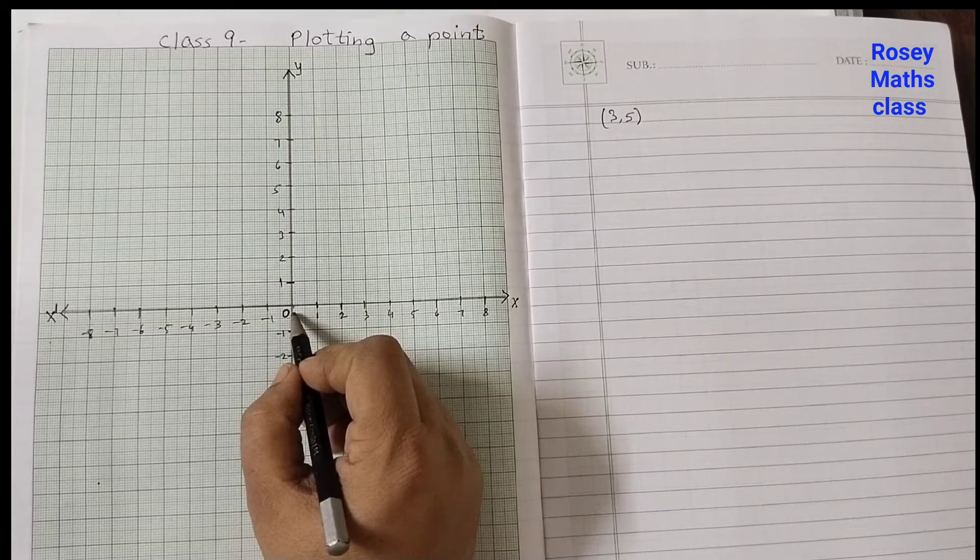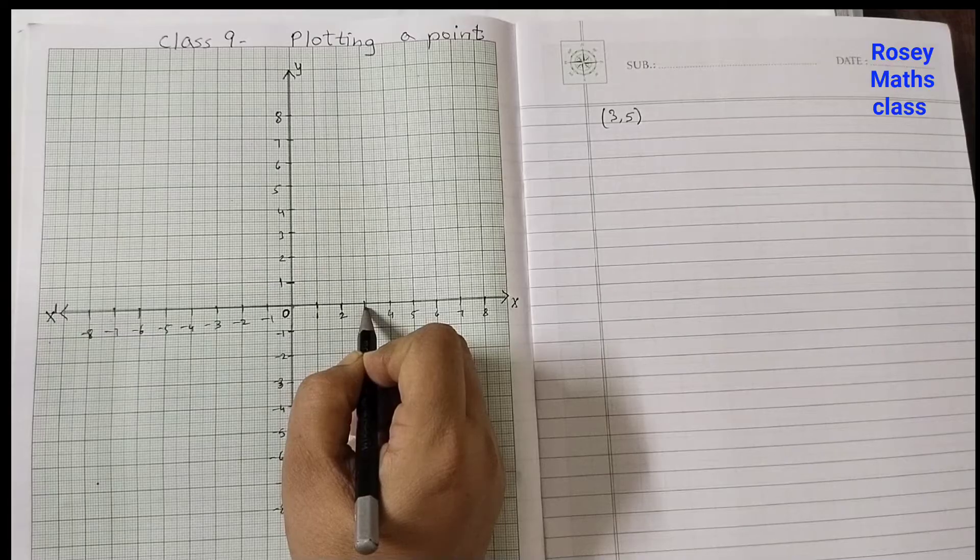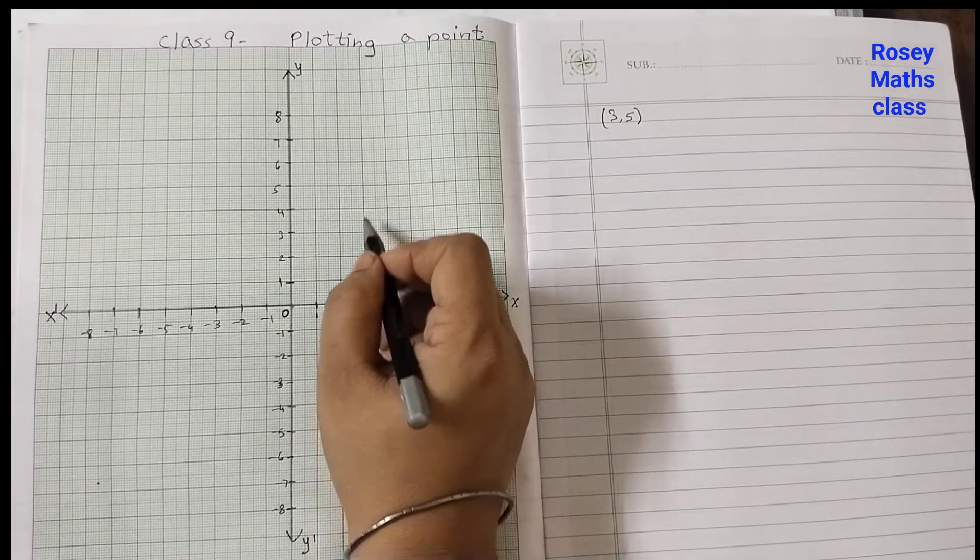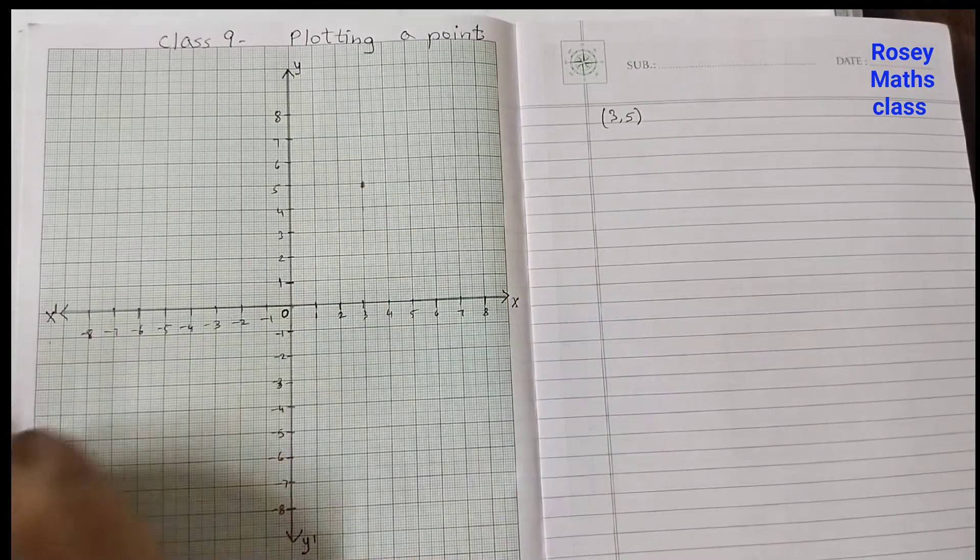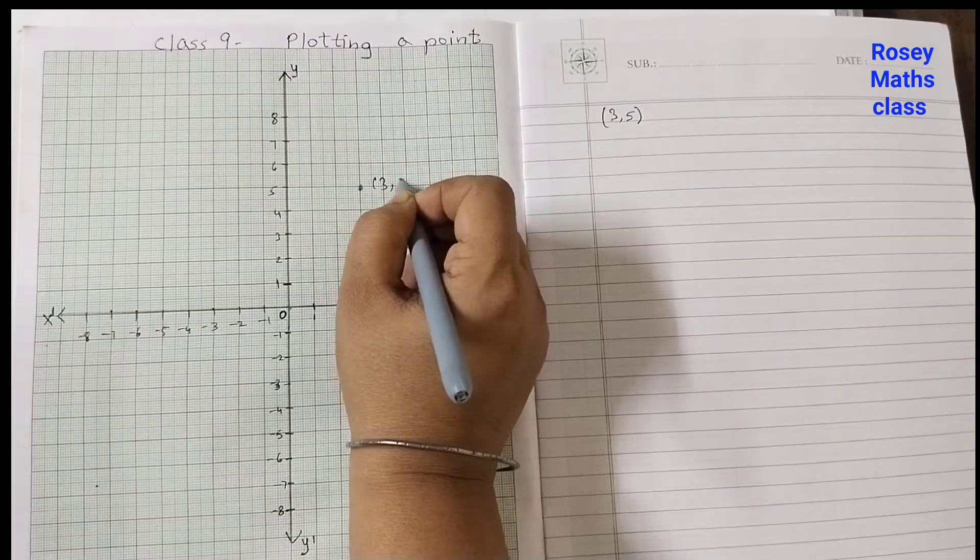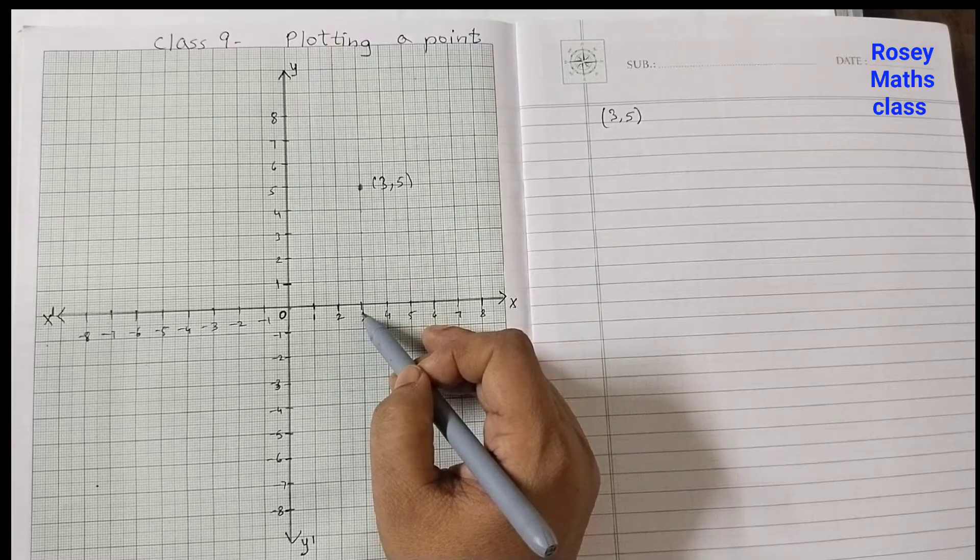And then five units up: one, two, three, four, five. This point is three comma five. Drop a perpendicular from here. You will see this is falling at three and here it's five. So three comma five.